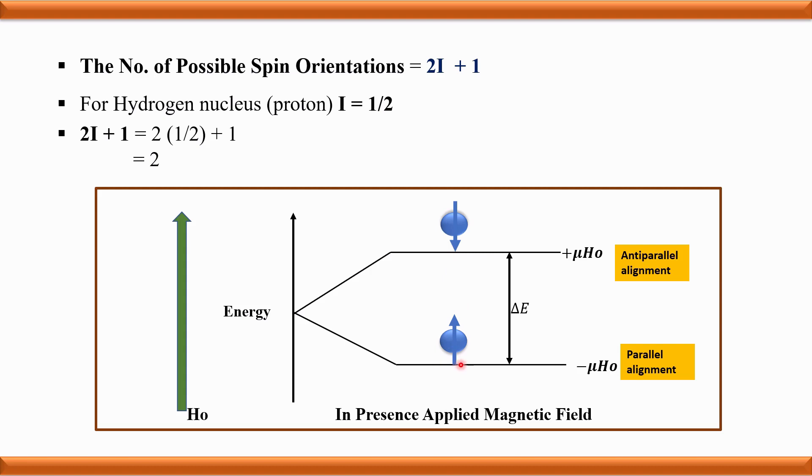When a spin state changes from low energy to higher energy, absorption of energy occurs. When it changes from higher energy to low energy, emission of energy occurs, which gives the signal in NMR spectra. The energy difference between these two states depends on the strength of the applied magnetic field.